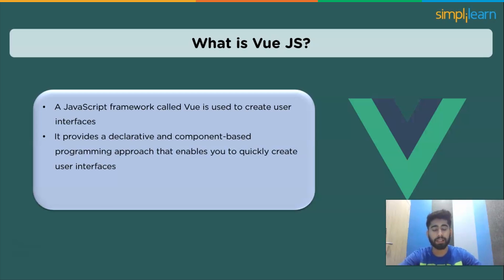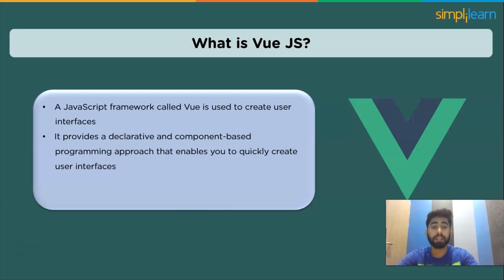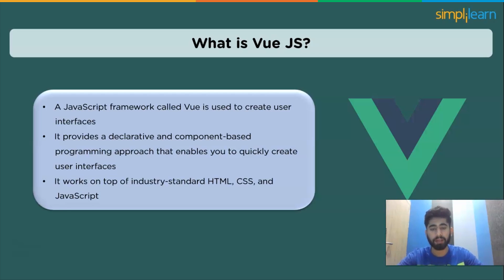Vue.js works on top of industry-standard HTML, CSS, and JavaScript. When using Vue.js you can add directives, which are HTML attributes. HTML apps can function thanks to Vue.js directives — both built-in and user-defined directives are available. You don't need prior knowledge of Webpack or build tools to start with Vue, but Vue makes it simple to rely on them when you're ready. Vue.js is referred to as a progressive framework because changes and improvements are made on a regular basis, making it easier to construct single-page applications and dynamic user interfaces.